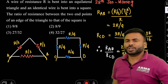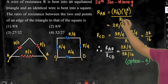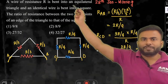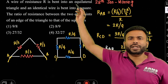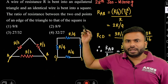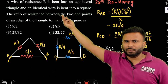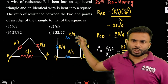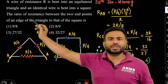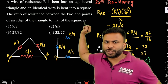One more question came from JEE Main 2025, based on resistance, from the 28th Jan morning shift. A wire of resistance R is bent into an equilateral triangle, and an identical wire — that means same resistance R, length, and area — is bent into a square. The ratio of the resistance between two endpoints of an edge of the triangle to that of the square is?